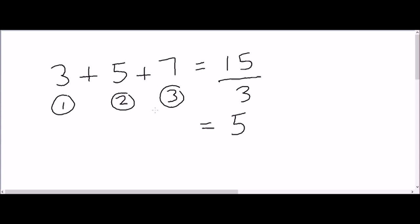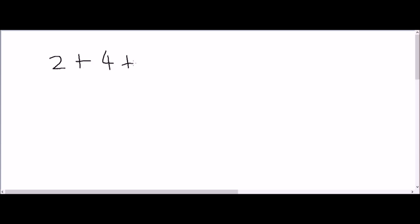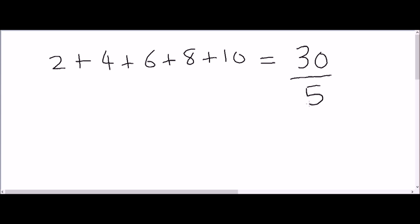Now let's do another example. Find the average of the following numbers: 2, 4, 6, 8, and 10. As per the formula, we first add all these numbers — 2 plus 4 plus 6 plus 8 plus 10. There are 5 numbers. Once you add these, the answer you get is 30, and we divide by 5 because there are 5 numbers in total.